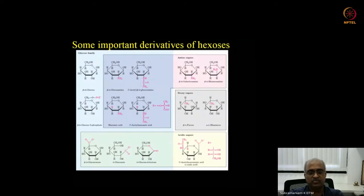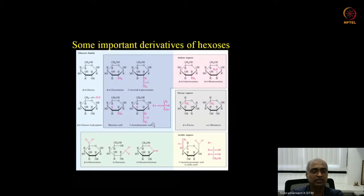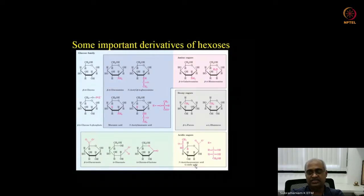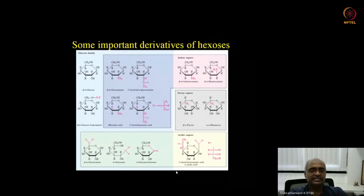Another important derivative commonly found in glycoproteins is N-acetylneuraminic acid, also called sialic acid. Unlike muramic acid (a hexose derivative), neuraminic acid is a nine-carbon sugar. It carries both an acidic group and an N-acetyl substitution, and it serves as a very important address-tag modification of glycoproteins.